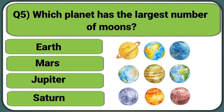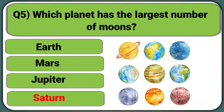Which planet has the largest number of moons? Earth, Mars, Jupiter, or Saturn. Answer: Saturn.